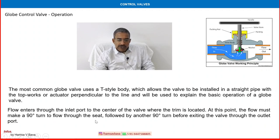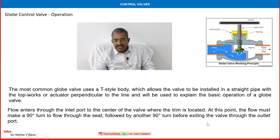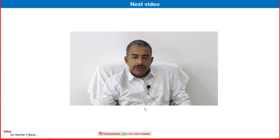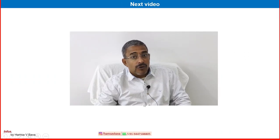The flow makes a 90-degree turn to flow through the seat, followed by another 90-degree turn before exiting the valve through the outlet port. From here it makes another 90-degree turn going back to the system. That is all about the control valve body.